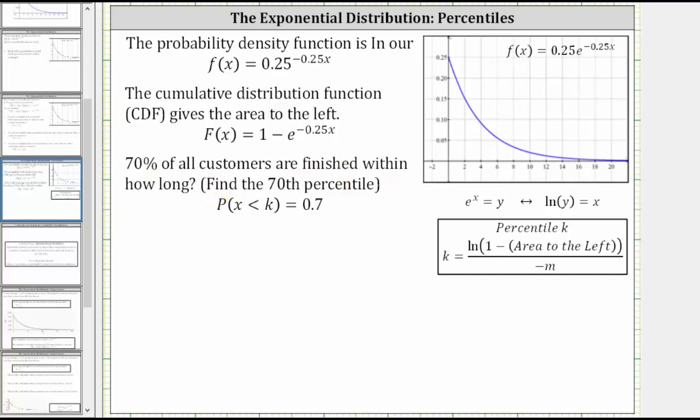So we're looking for some value of x, let's call it k, that would be approximately here, where 70% of the customer times are less than or equal to k, and therefore the area to the left of k is equal to 0.7.